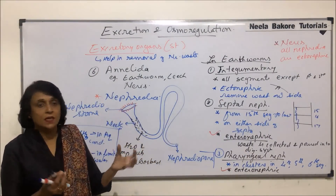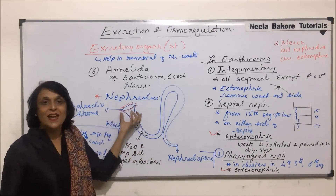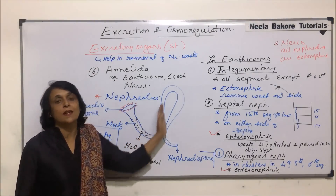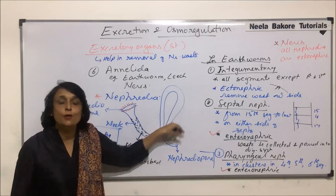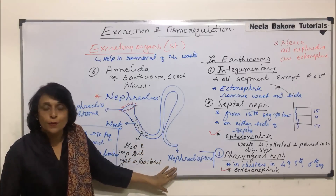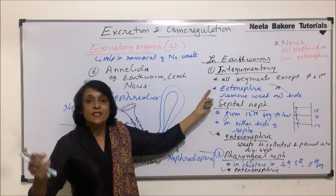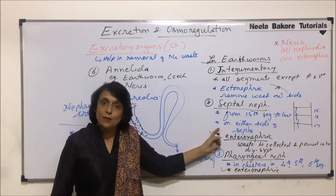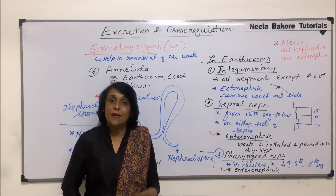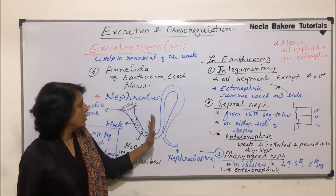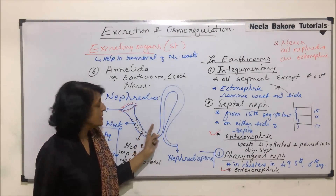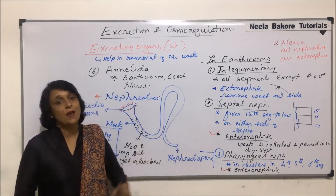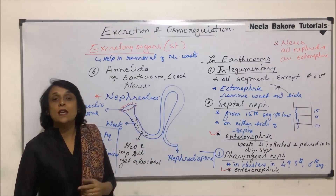The structure of a nephridium is basically a highly coiled tube. There is a funnel-like opening — the nephrostome — lined with cilia. The anterior neck region is also lined with cilia so the fluid can be conducted. At the end of the tube is an opening called the nephridiopore, which may open directly on the skin to eliminate waste outside, or open into a common duct leading to the alimentary canal so waste is eliminated with undigested food.